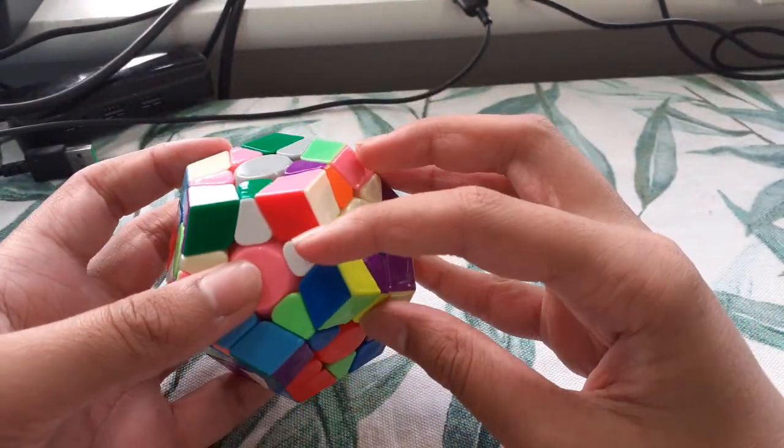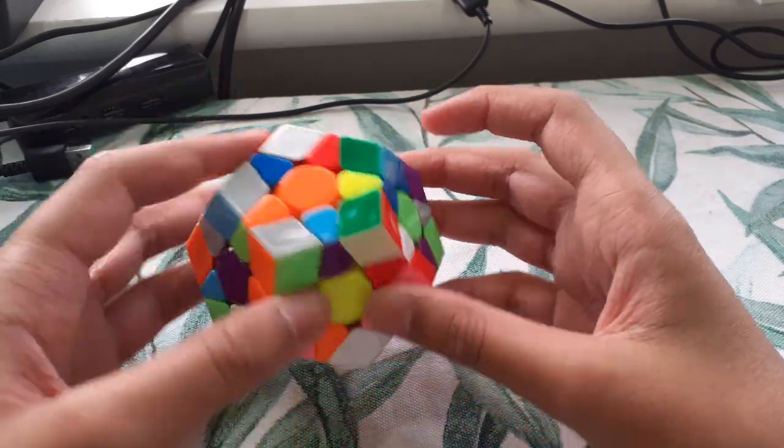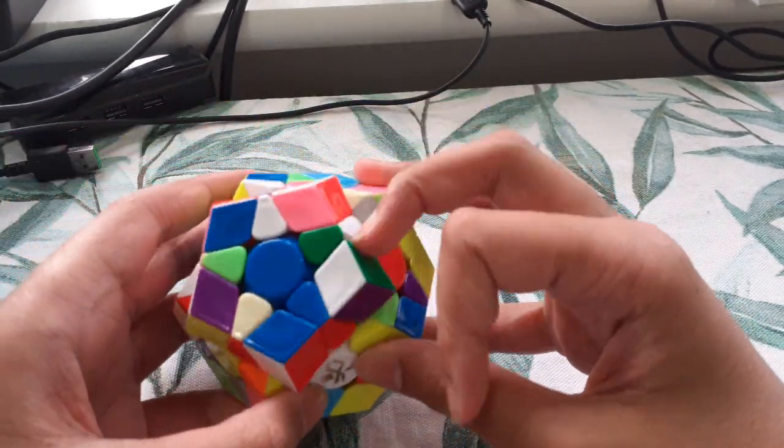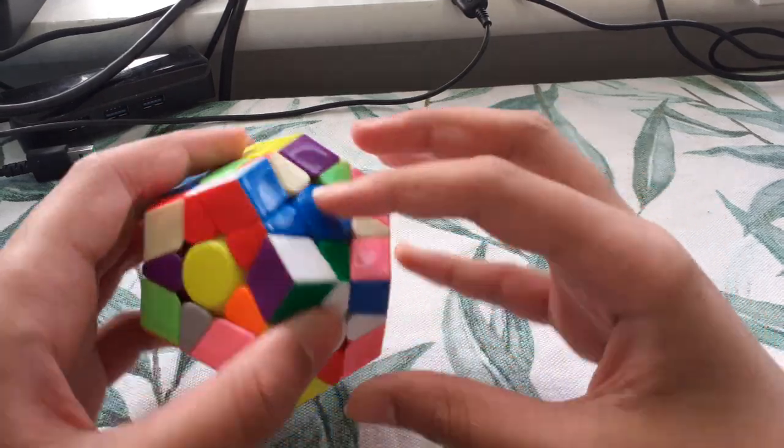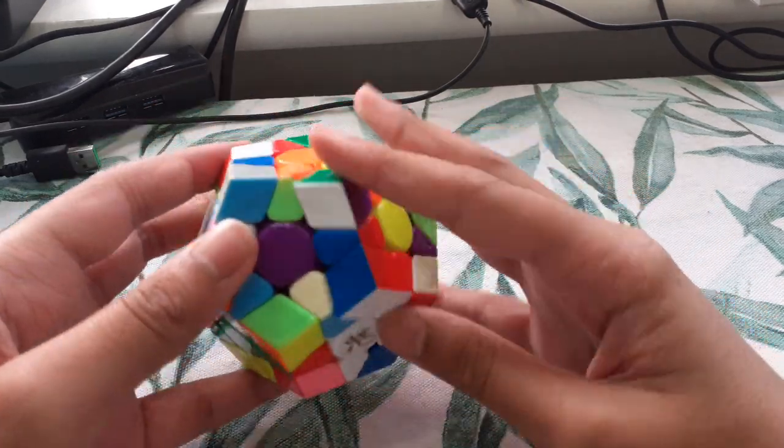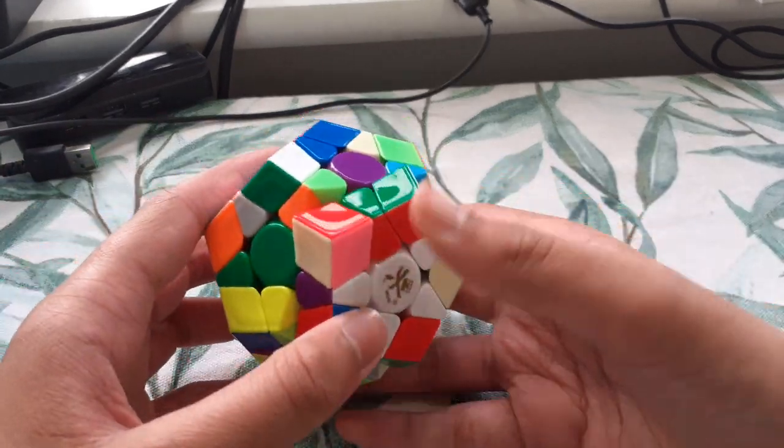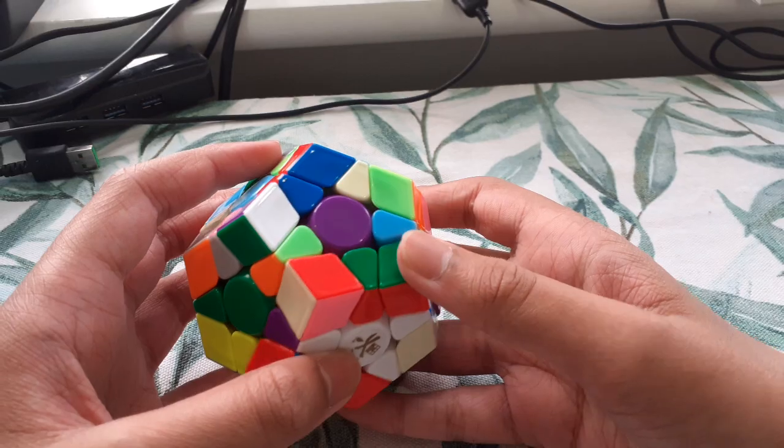Star pieces are here, here, here, here, and here. I can insert purple and green together like this, then insert red. Now inserting blue will take out this pair, and also I have this pair which I'll keep a note of.